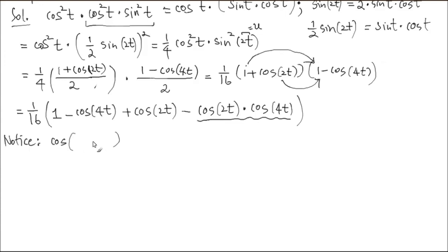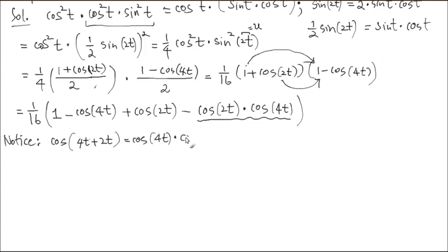So, 4T — the larger angle first. I'm looking at cosine of (4T + 2T), which is cosine 6T. Applying the addition formula: cosine 4T times cosine 2T — hey, we have that right there. What is the remaining part of the formula? Sine 4T times sine 2T. It's just sitting right there, giving cosine 6T.